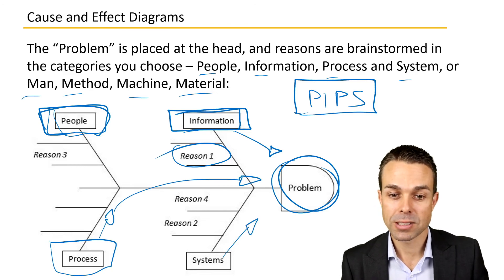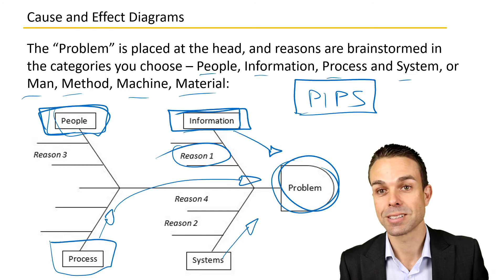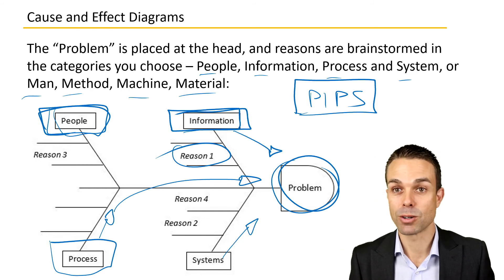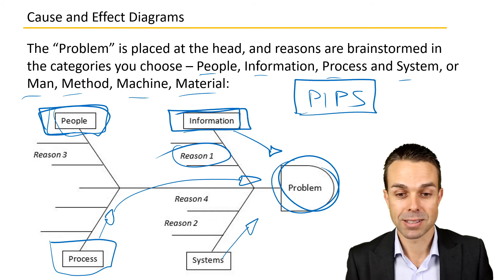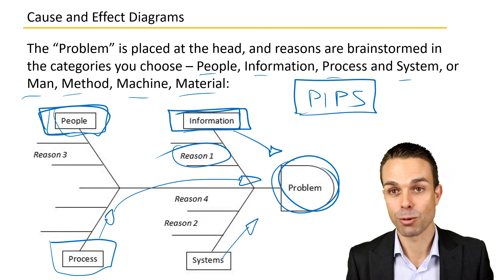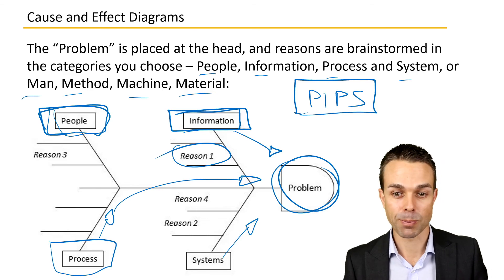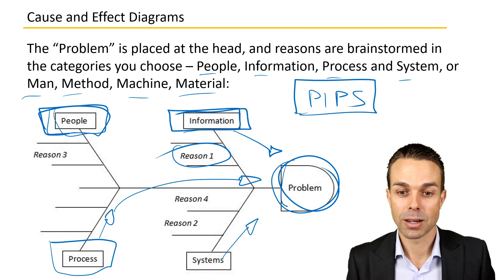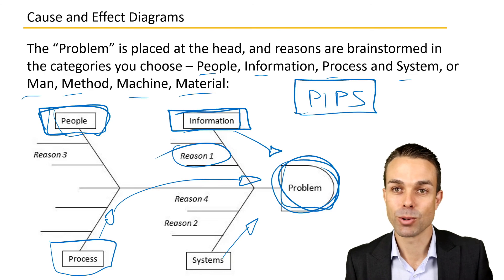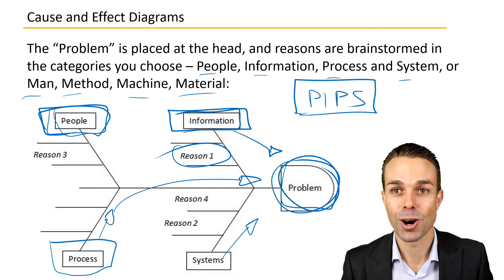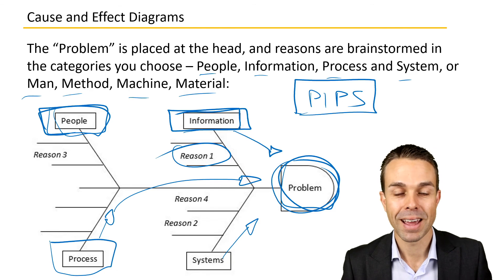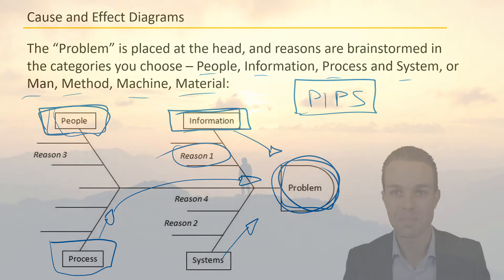Or is the system hindering us? Do we have the wrong system, is there a bug in the system, is it not performing as we expected? All of those things might contribute to the problem, and that's just the lens we view our problems through to help us find the real or root cause of our problem. And that is a cause and effect diagram.